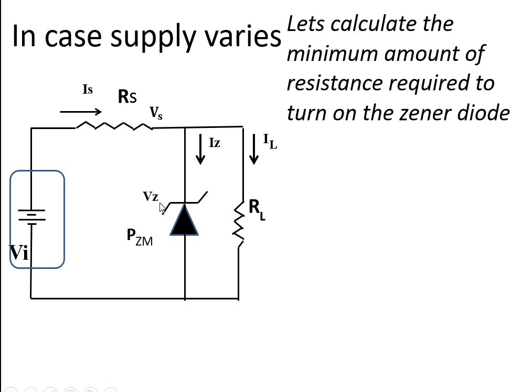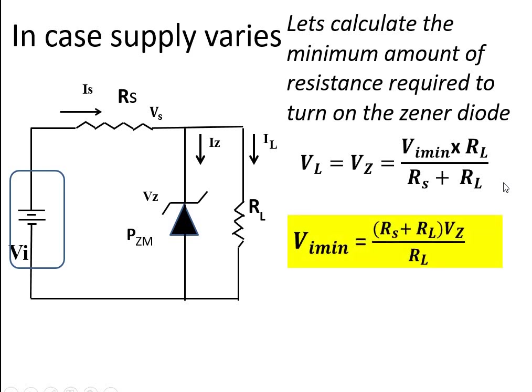How much variation in power supply can the Zener diode manage? Let's calculate that. This is the equation which we studied in the last lecture. Just remember this equation by heart. Put the value as Vi minimum. Vz is constant here, everything is constant other than Vi minimum. This way we can calculate the minimum possible supply voltage which one Zener diode can handle.